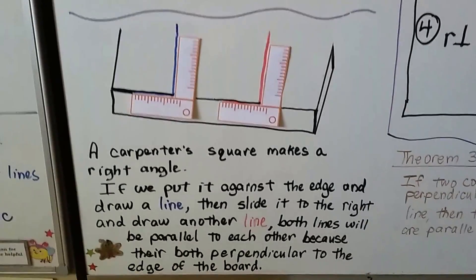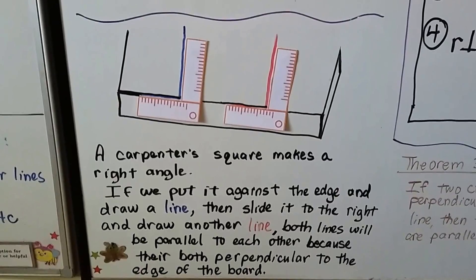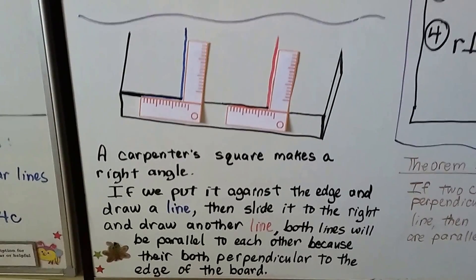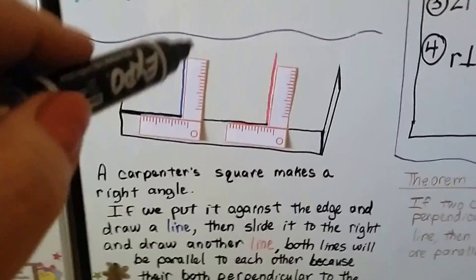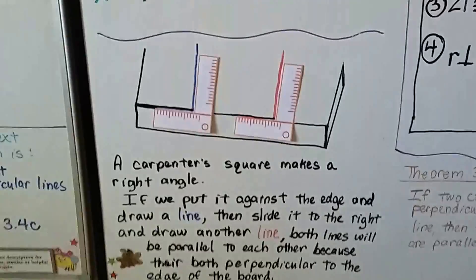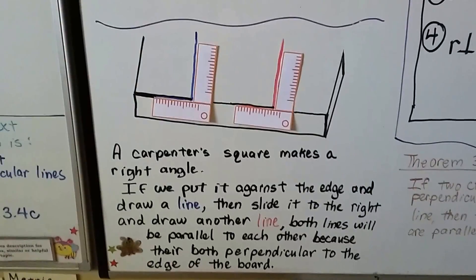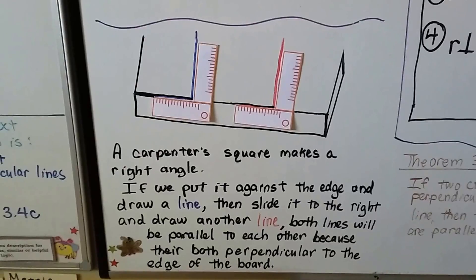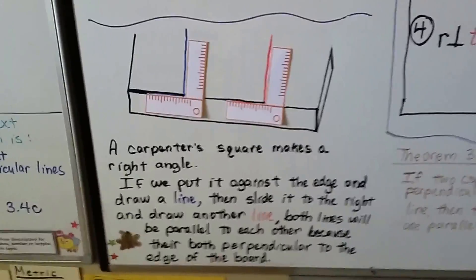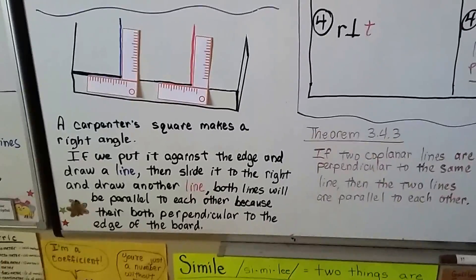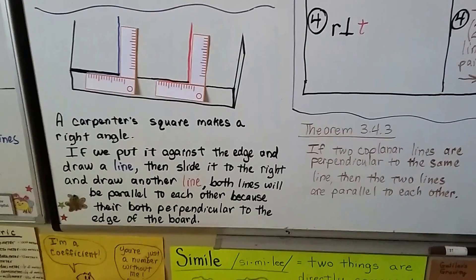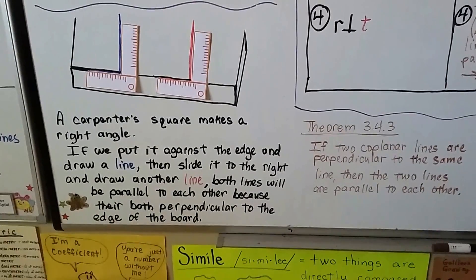A carpenter's square makes a right angle. If we put it against the edge of a piece of wood or a table and draw a line like the blue line, then slide the carpenter's square over and draw another line like the red line, both lines will be parallel to each other because they're both perpendicular to the edge of the table or board. That illustrates theorem 3.4.3: if two coplanar lines are perpendicular to the same line, then the two lines are parallel to each other.